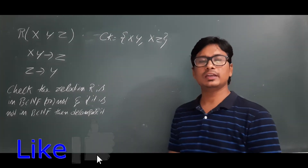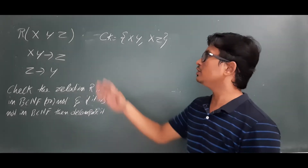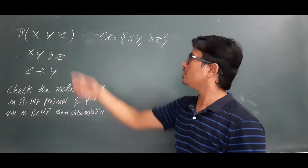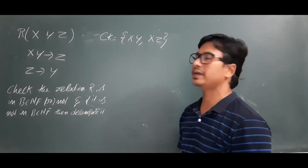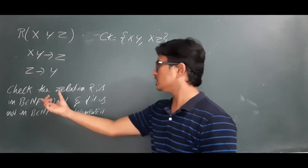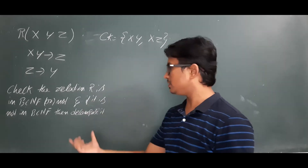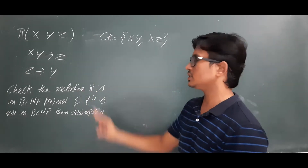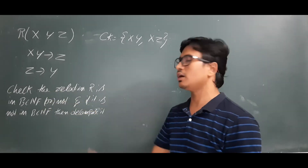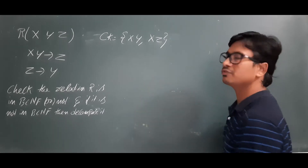Good morning students. In the earlier video we discussed what is BCNF and solved one question. In this video we will discuss one more question related to BCNF for better understanding. They have given a relation R which consists of attributes X, Y, Z along with the functional dependencies and candidate keys. They are asking us to check whether relation R is in BCNF or not, and if it is not in BCNF, to decompose it.